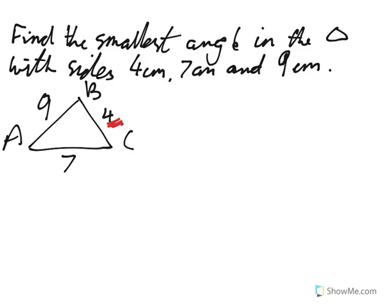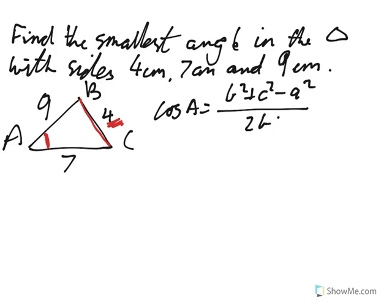The smallest angle, the two sides that make it are going to be opened up less, so which one opens them up less? Four spreads out those two ends less than 9 or 7 does, so the angle that we're interested in here is angle A. The version that we are looking at is cos A equals b² plus c² minus a² over 2bc, and so we've got 7² plus 9² minus 4² over 2 times 7 times 9.